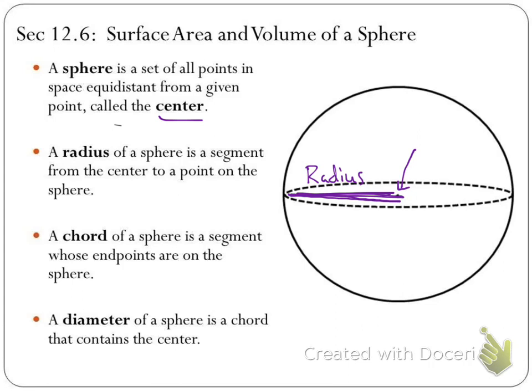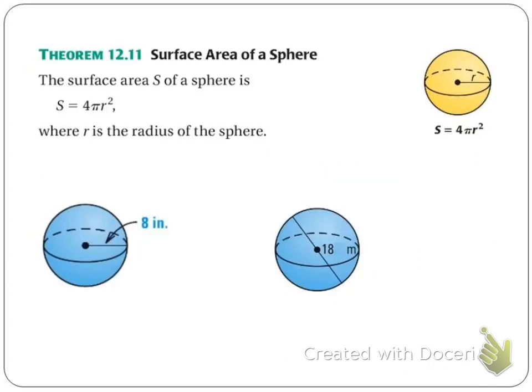Other things we have are the chord, which connects two points on the sphere — same idea as with the circle. And a diameter, which goes through the center of the sphere. Typically, like we saw with the circle, we take the diameter and cut it in half to get the radius. So when we're looking at surface area and volume, we're going to want to find the radius, because that tells us how big or how small the sphere is.